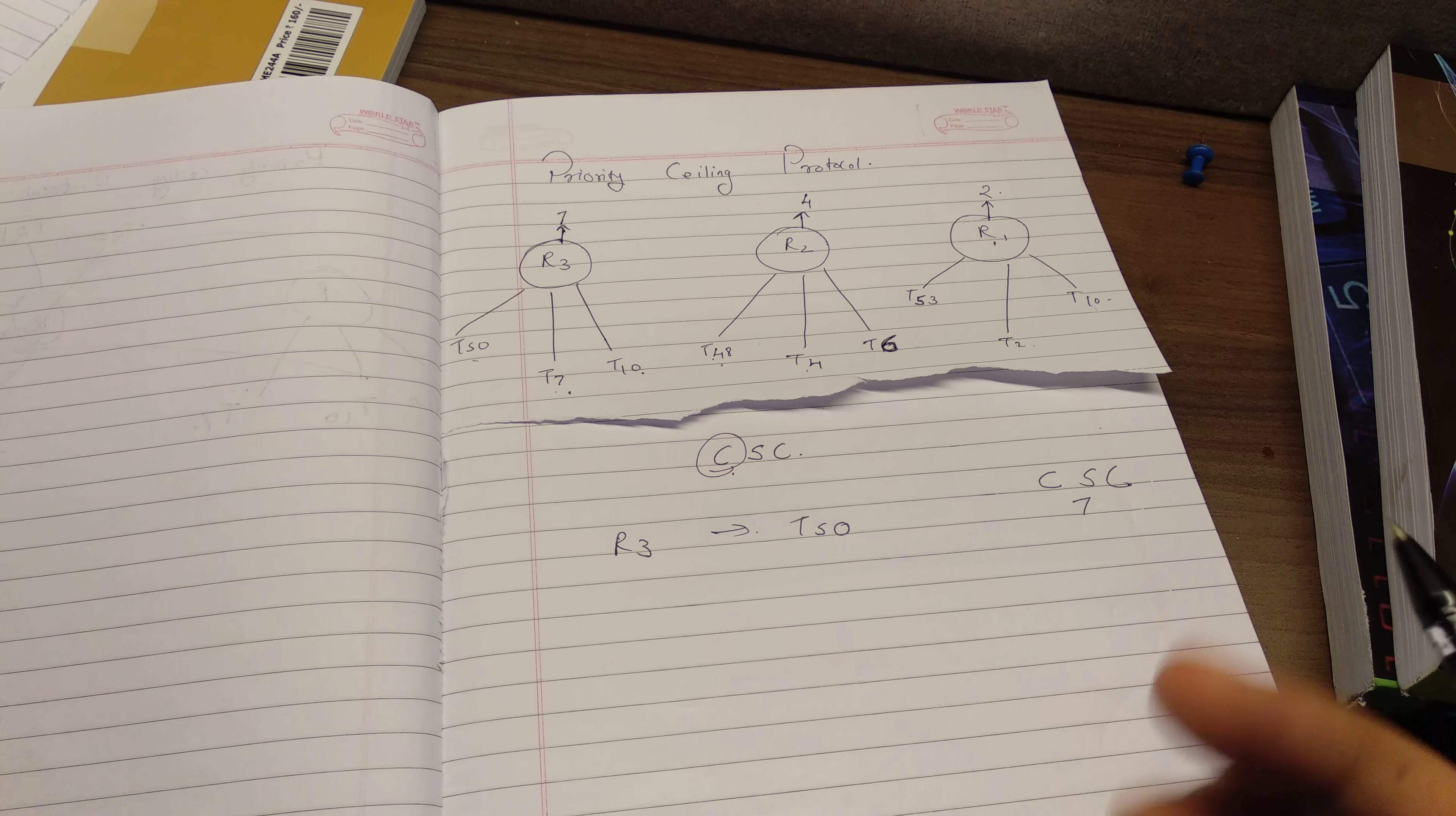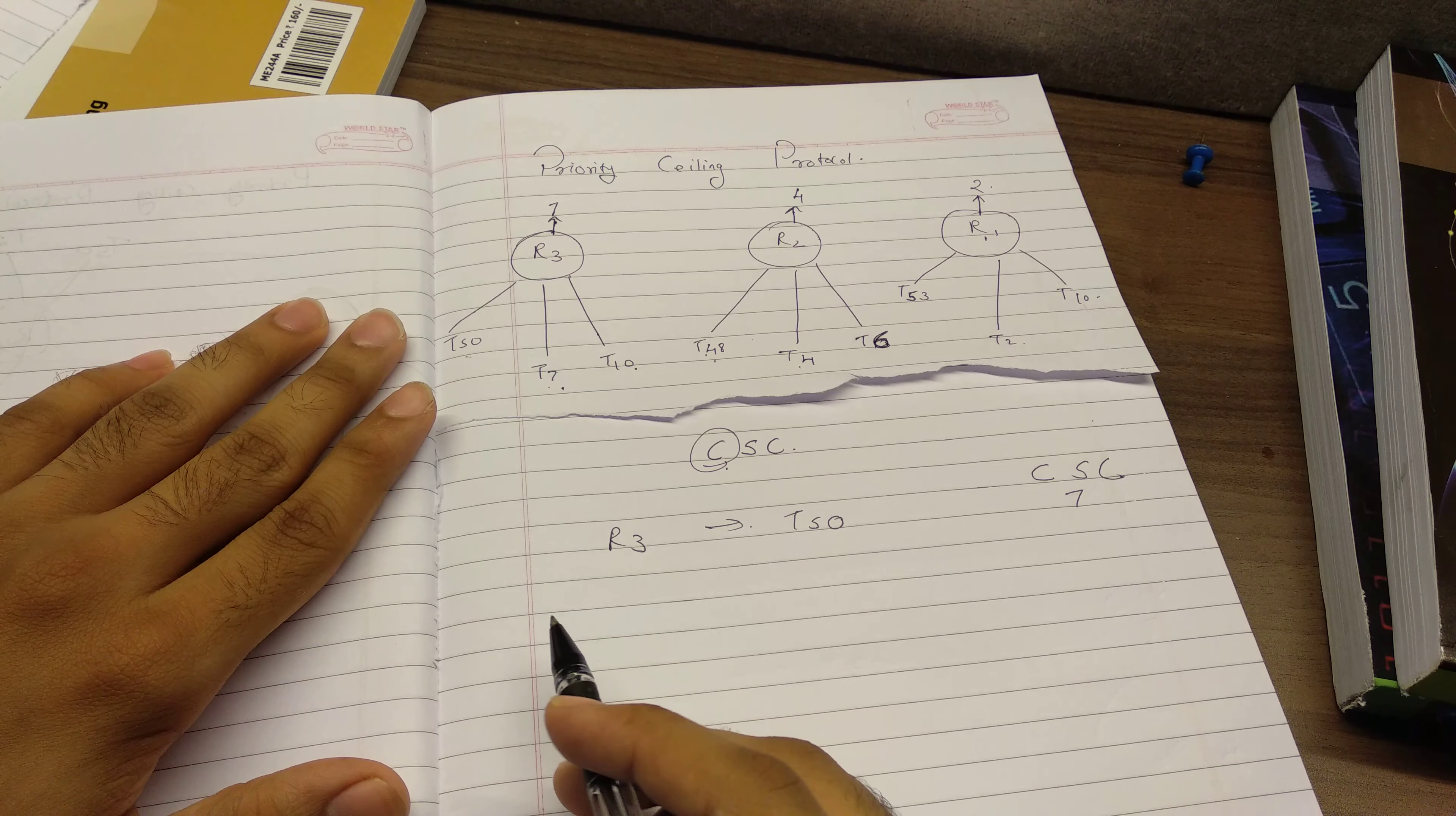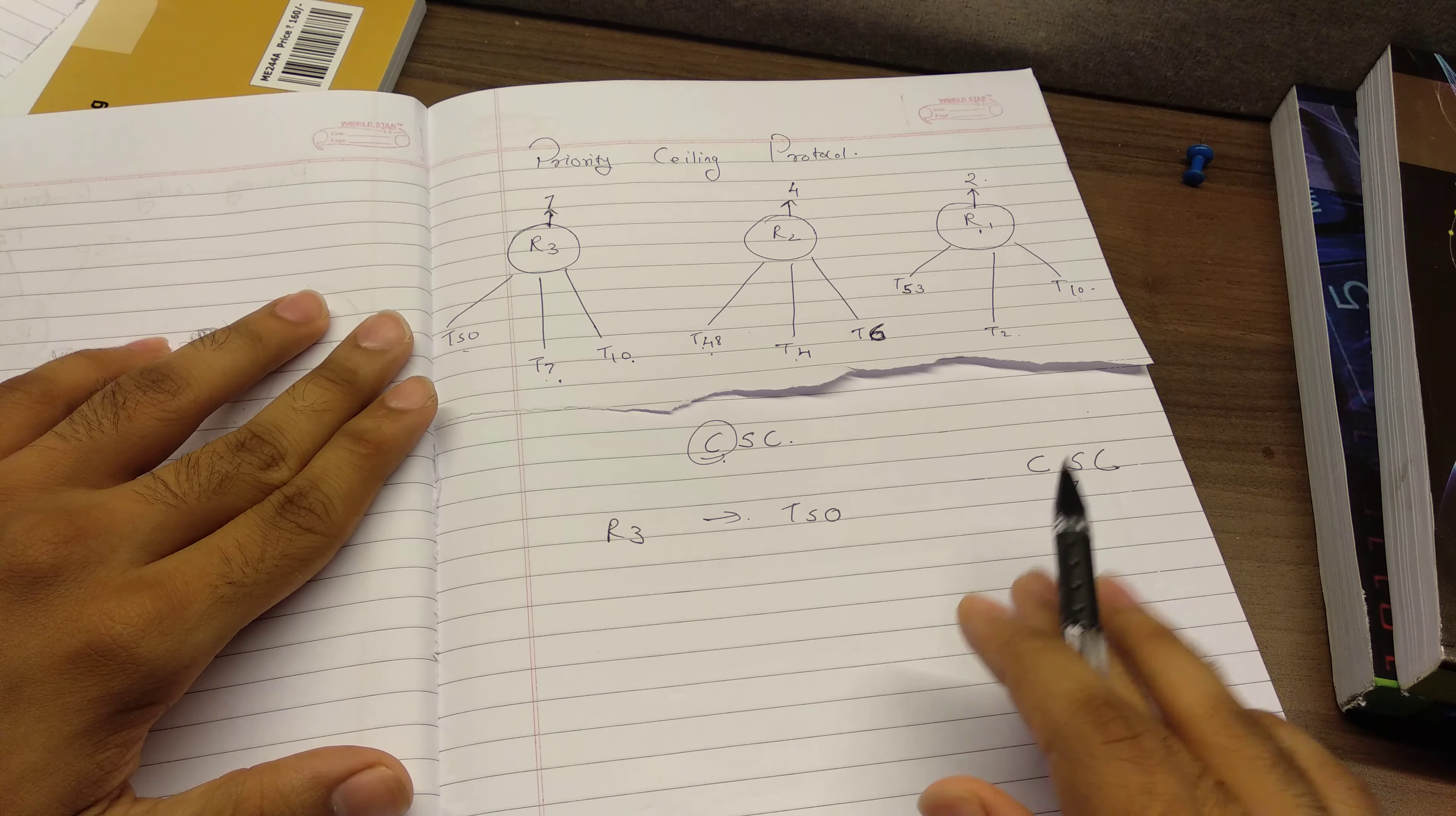Now we'll just continue with this same example. If my OS is completely empty, there is no resources being used, and now I have a T50 requesting R3, it would be immediately granted R3 and its ceiling would be set to, the current system ceiling would be set to 7.